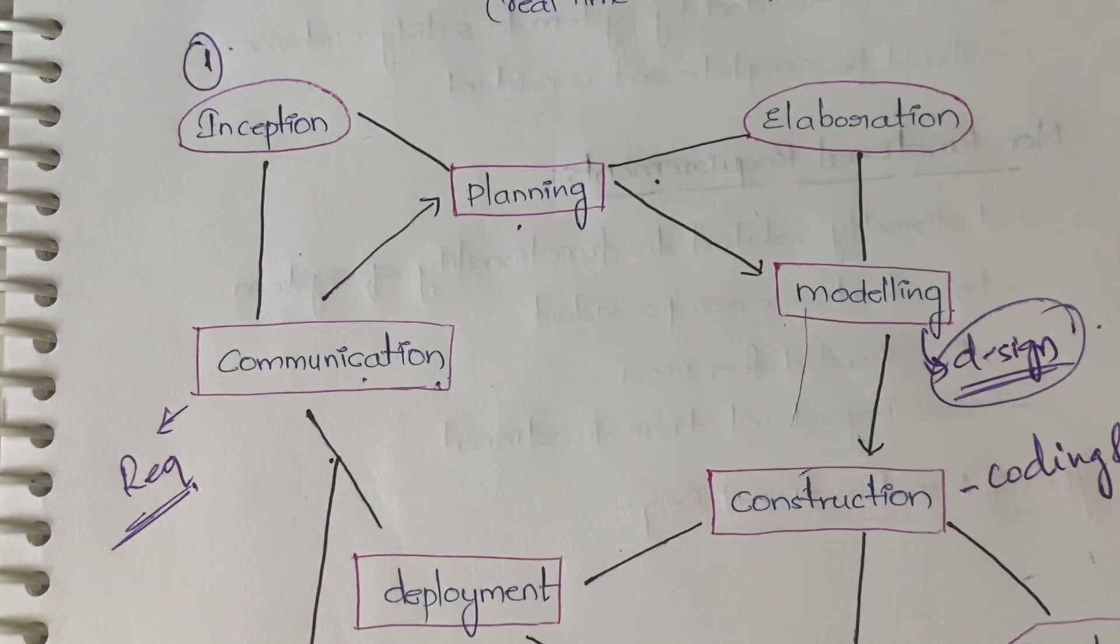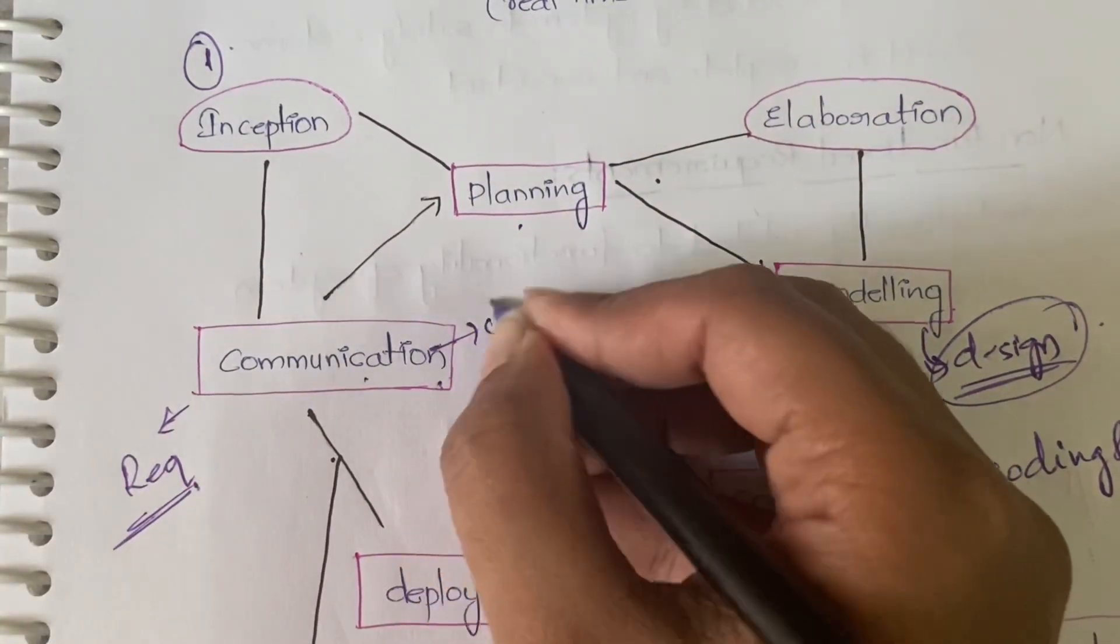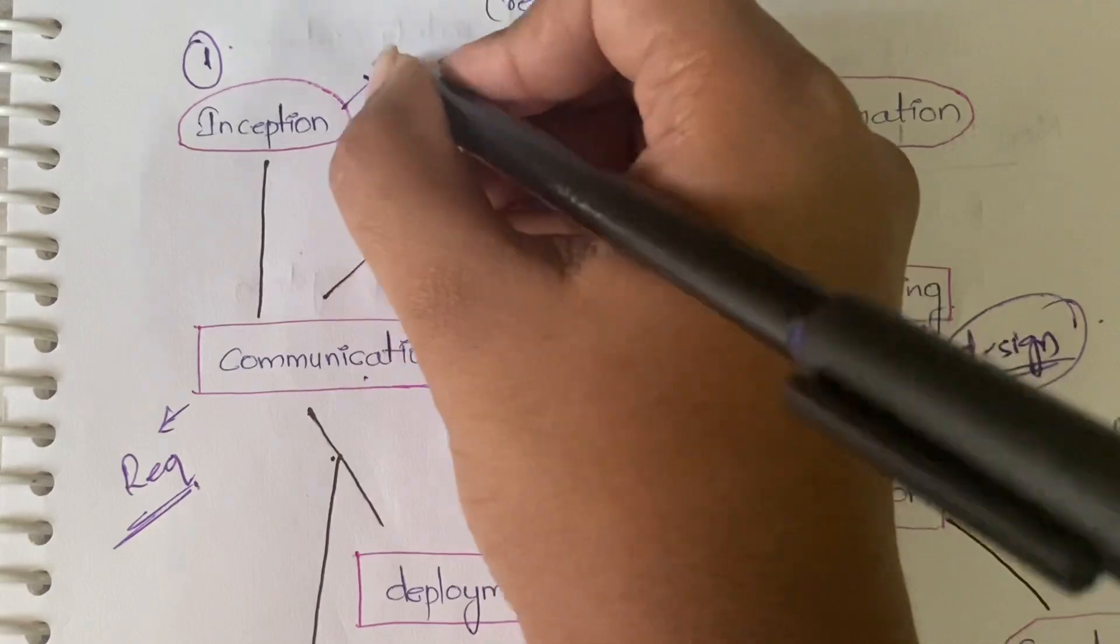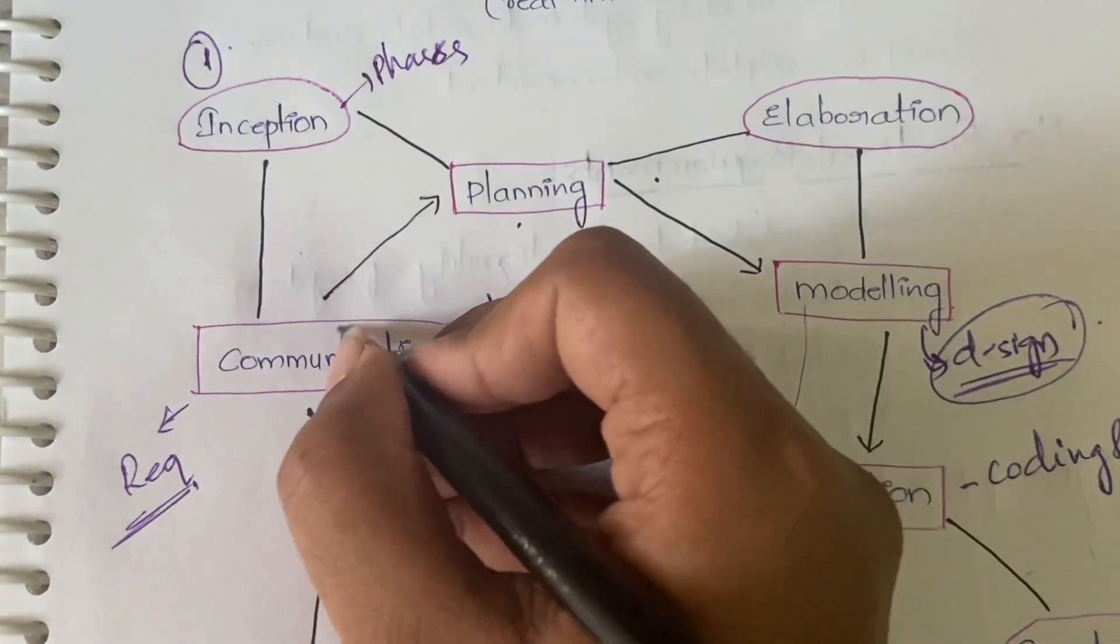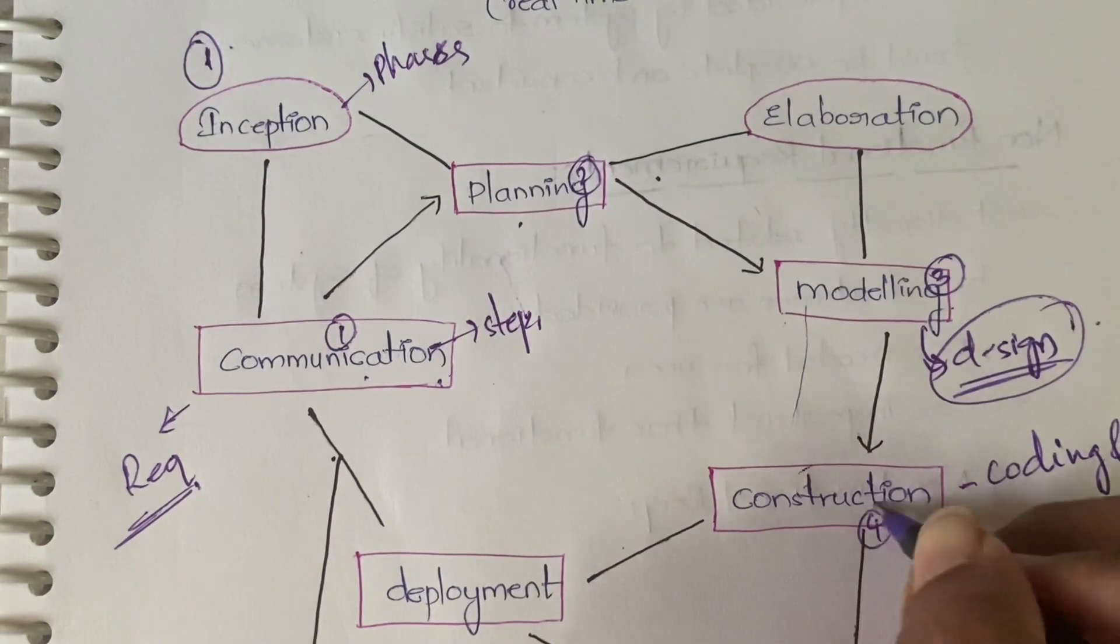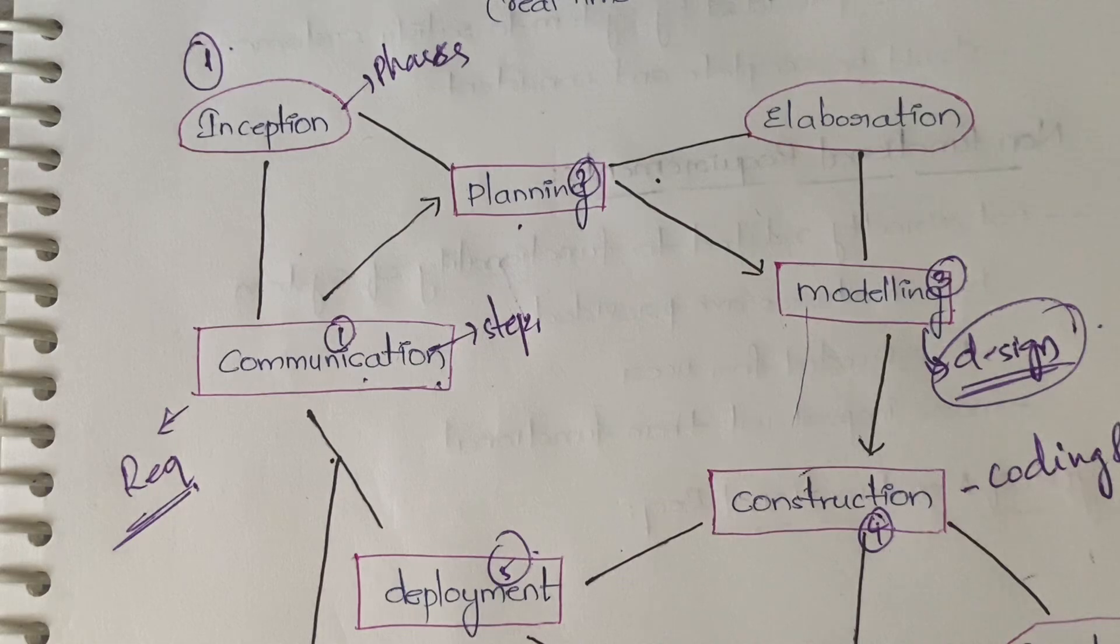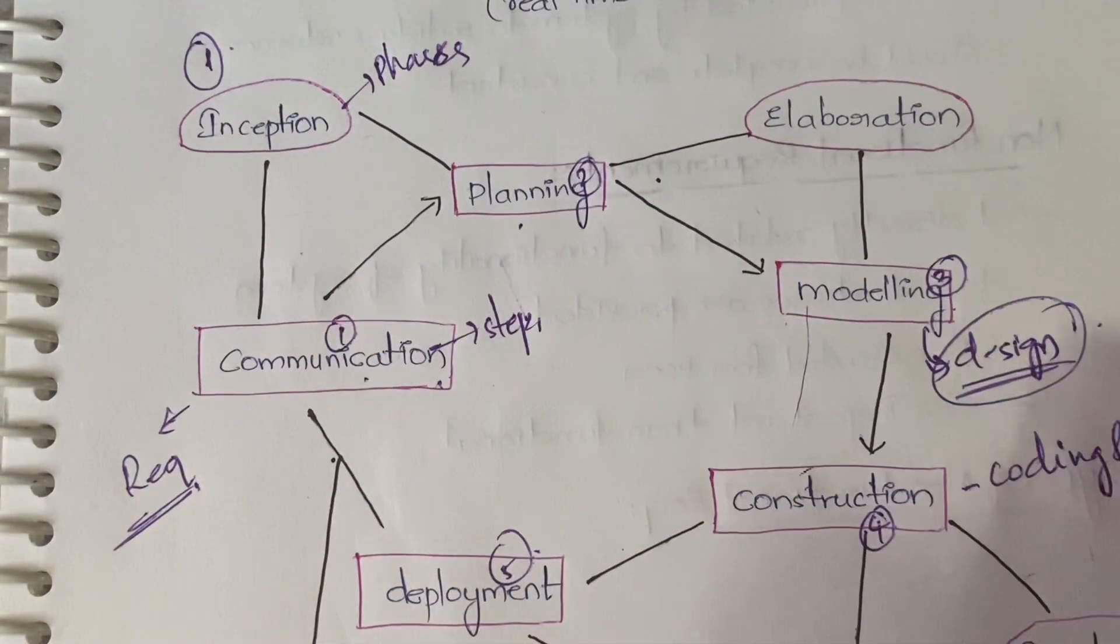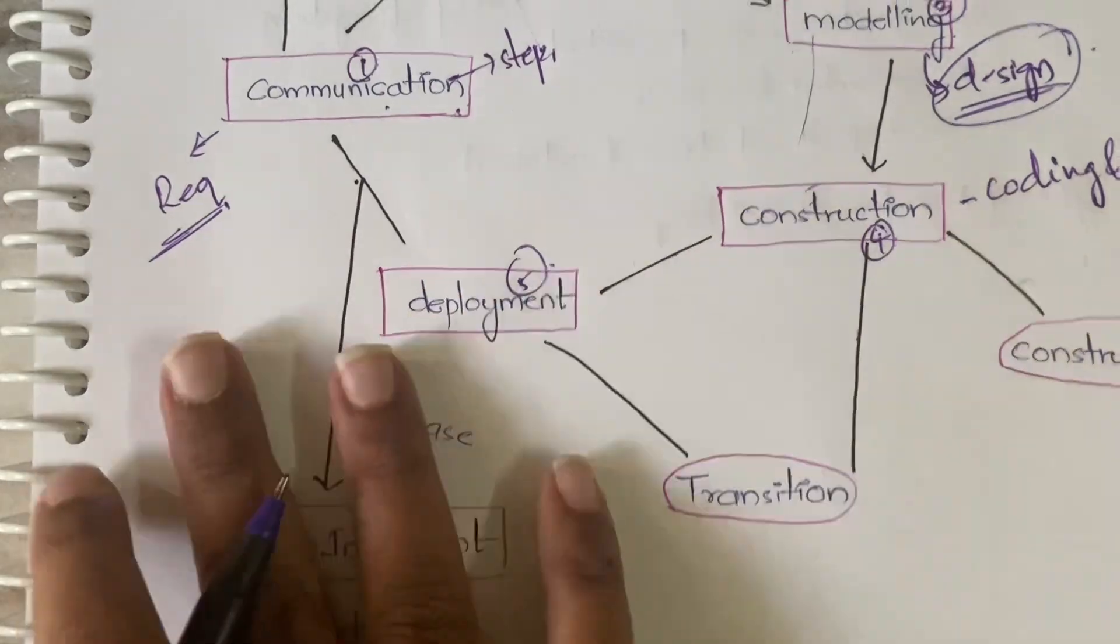Next comes elaboration. This is the first phase - it has five phases and five steps. These are the steps and these are the phases: one, two, three, four, five phases, and here we have production.